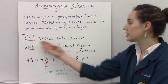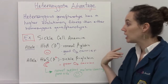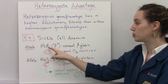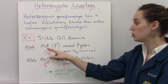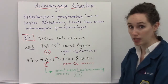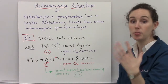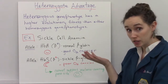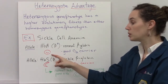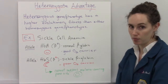The classic example here is sickle cell anemia. There are two alleles. There's the HbA allele, which codes for the normal and functioning beta-globin protein that helps carry oxygen in your blood. If you have this allele, then your red blood cells are that classic little belly button shape.